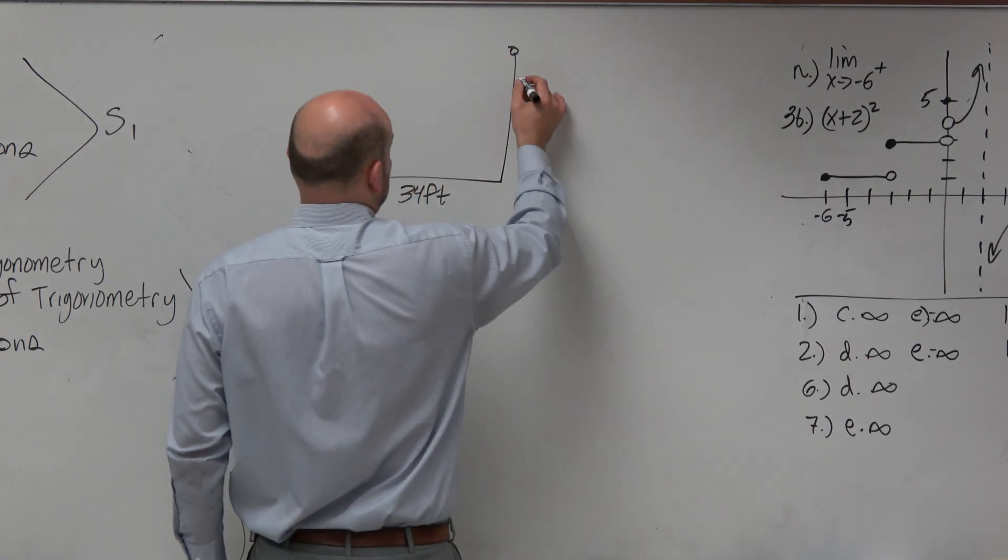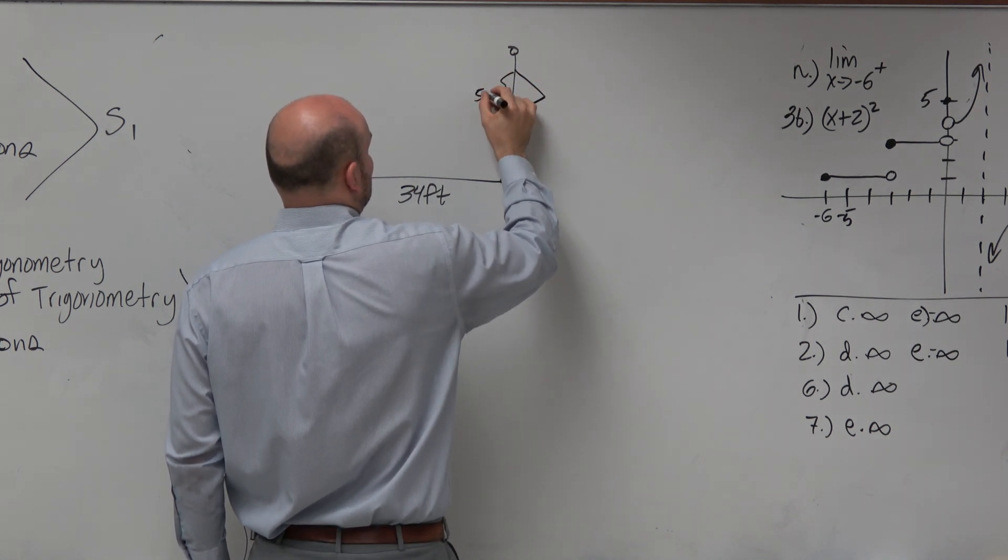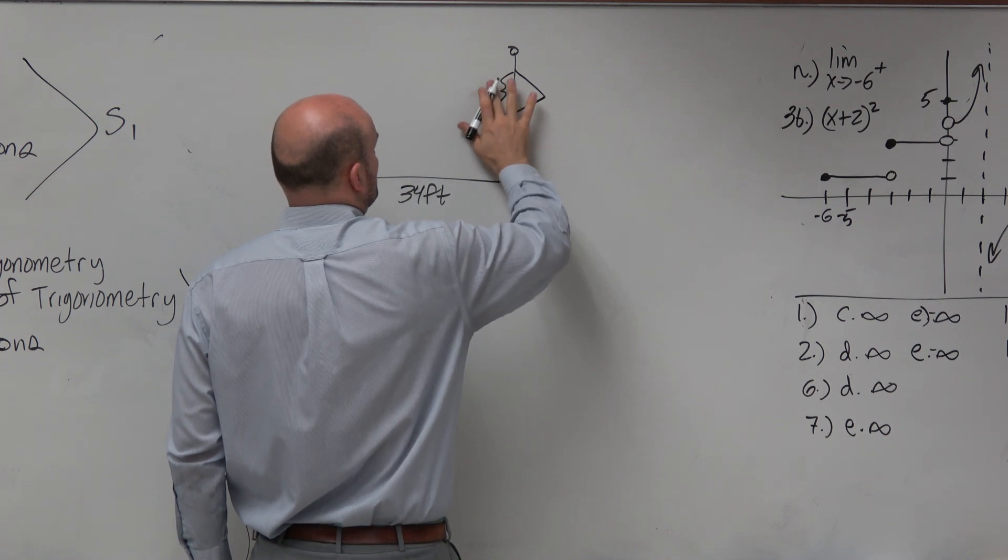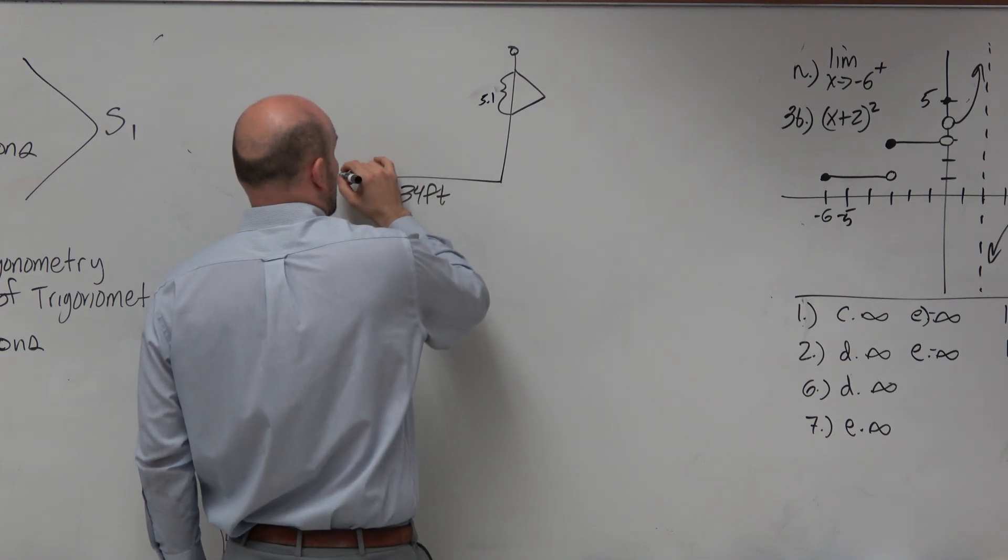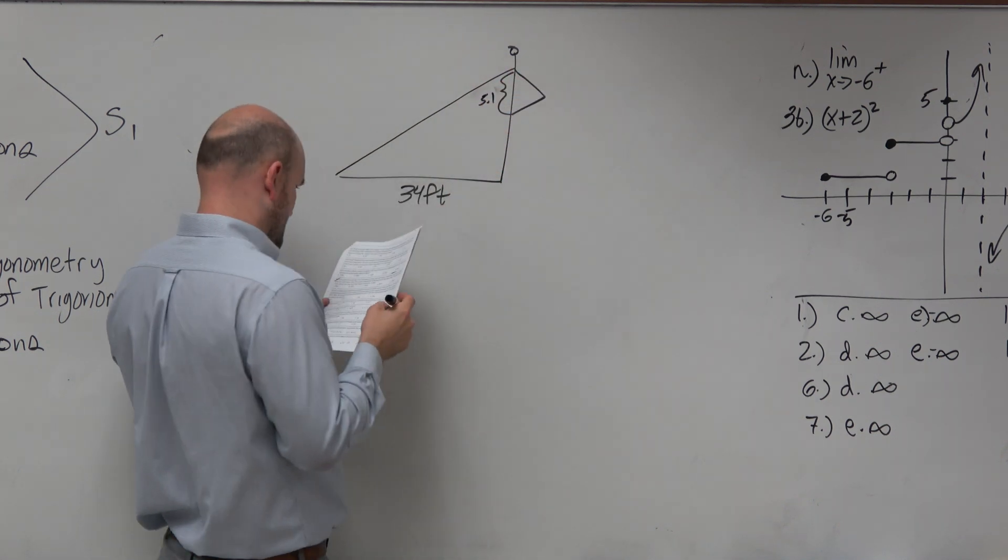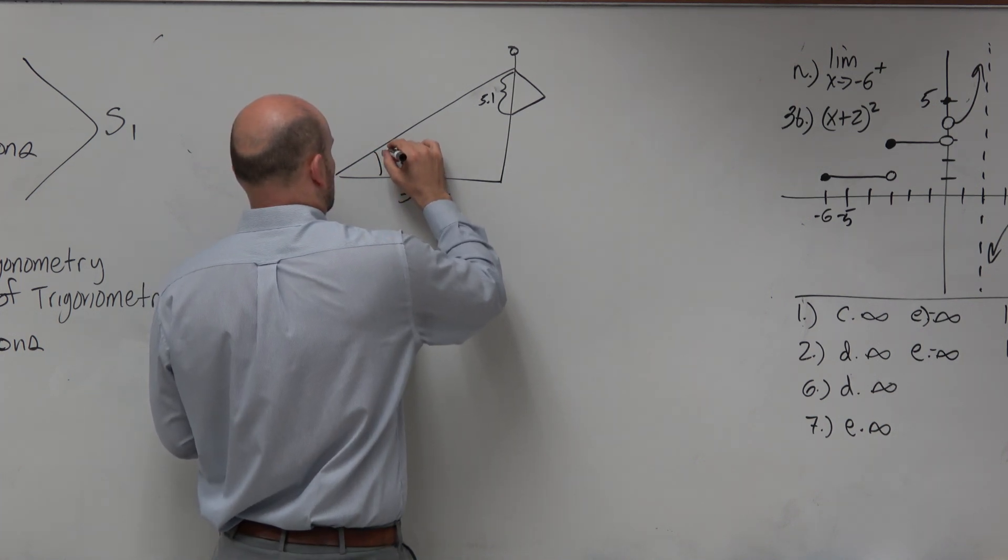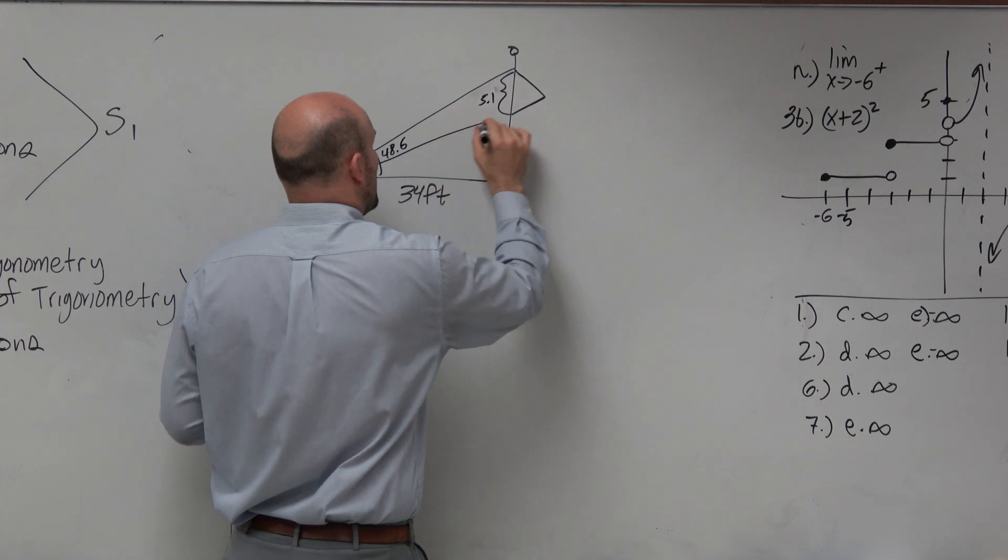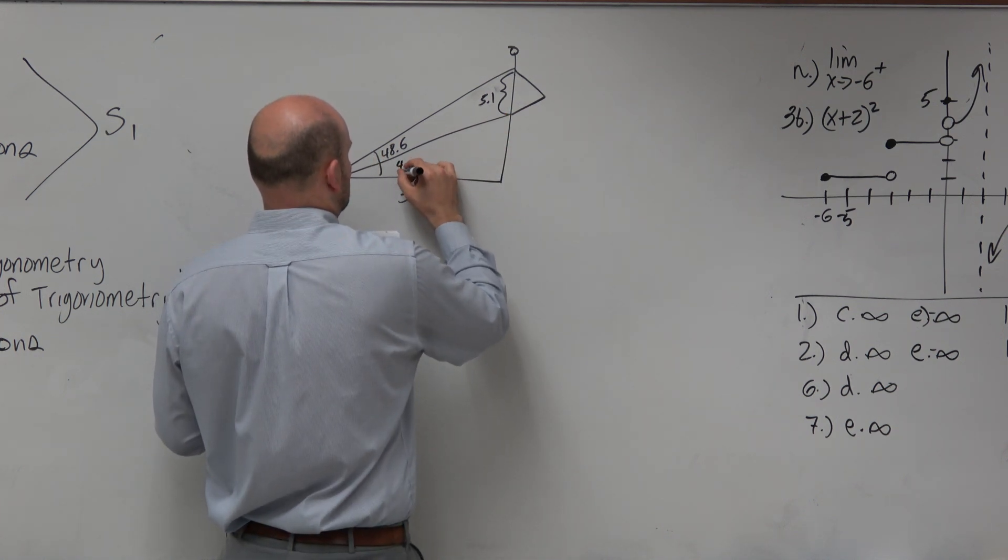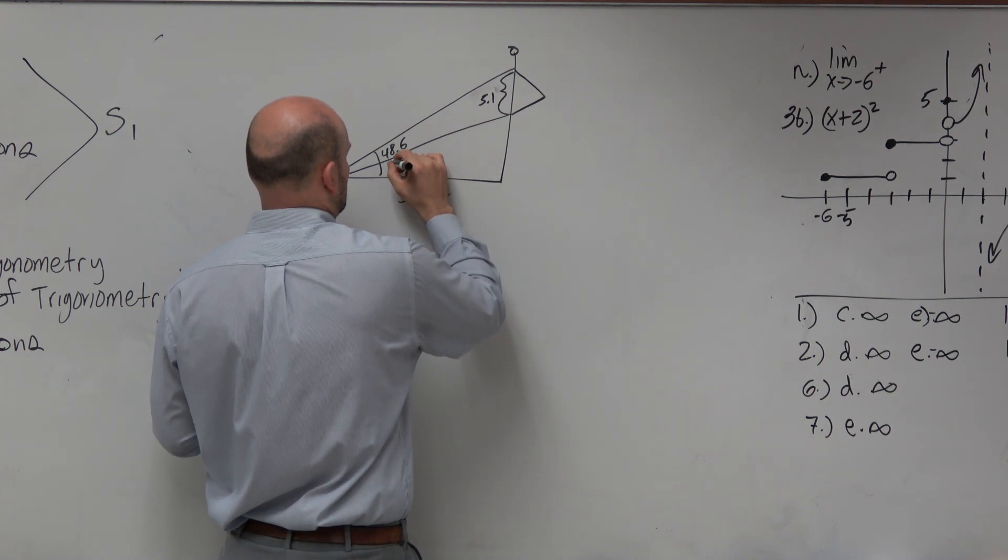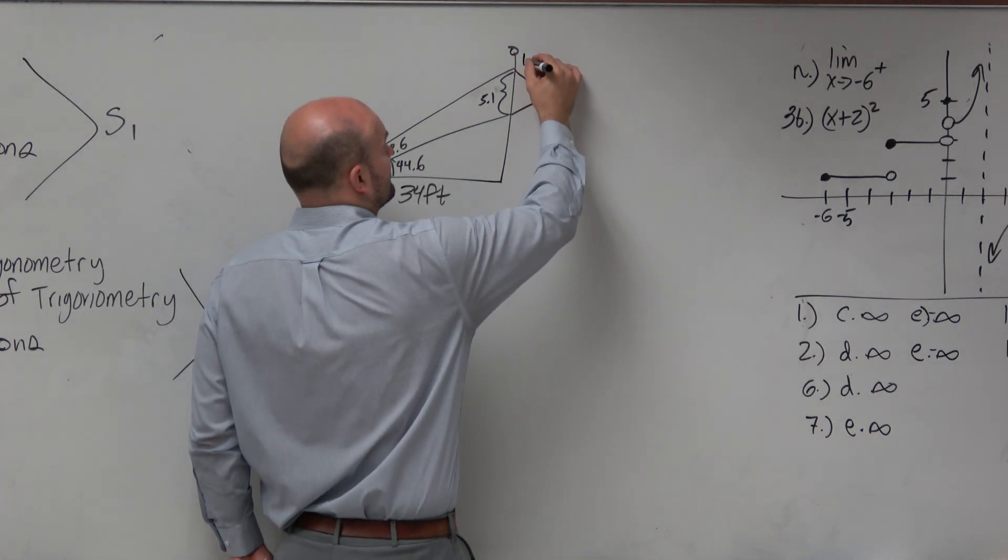So we have a flag. That's 5.1. That's my flag. And it says the angle of elevation to the top of the flag is 48.6. The angle of elevation to the bottom of the flag is 44.6. And then this distance is one foot as well.